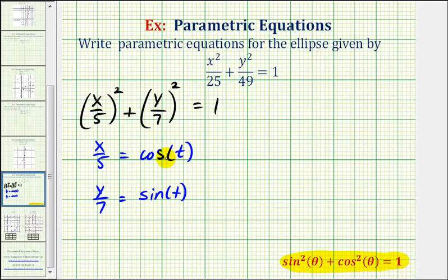So notice if we perform these substitutions, we would have cosine squared t plus sine squared t, which does equal 1.